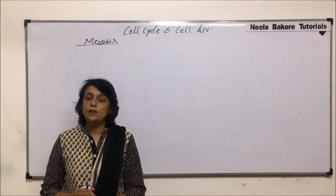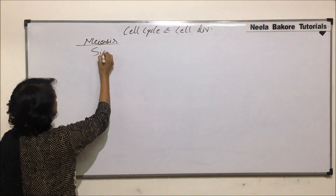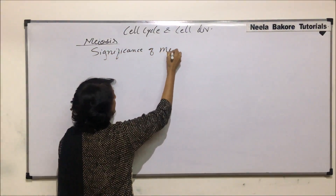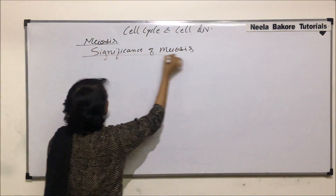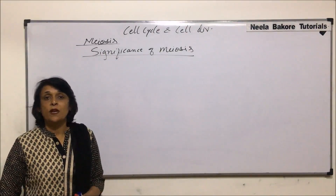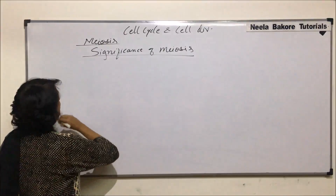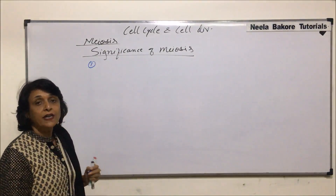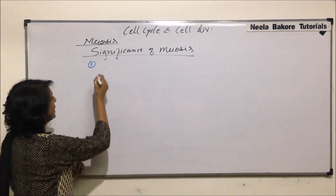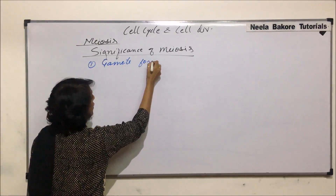In this video, we will discuss the significance of meiosis — what are the important things when meiosis plays the most important role? The first thing is that meiosis helps in haploid gamete formation, which is essential for sexual reproduction. So the first importance is gamete formation.